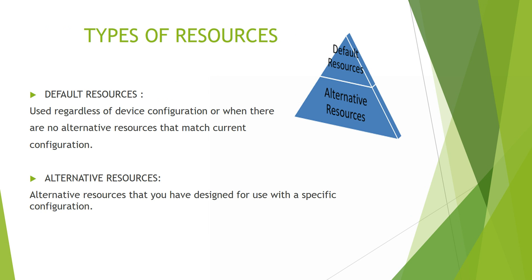Default resources are your animation, layout, and XML files that will be executed by default if you have not specified any alternate resources. Alternative resources can be included when you want a specific configuration — for example, you want your application displayed in a different language like French, Chinese, or Spanish, or you want portrait view instead of landscape, or you want your application running on a high-density pixel screen.